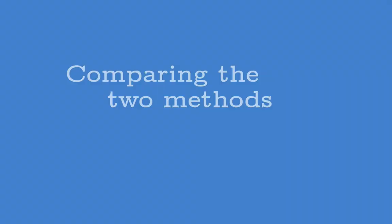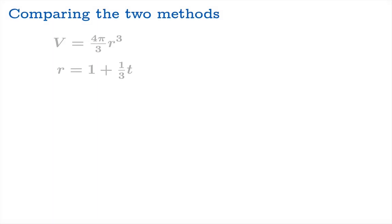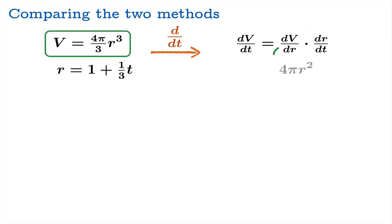So let's compare the two methods. We started with these bits of information. A formula for volume as a function of the radius, and a formula for the radius as a function of time. In the first method, we simply launched into calculating derivatives first, which, using implicit differentiation, is quite easy. Don't forget the chain rule. dv dt equals dv dr times dr dt.